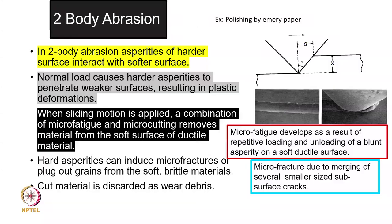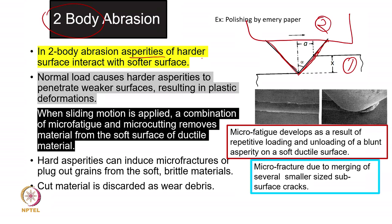Now we will start with 2-body abrasion. In 2-body abrasion, we consider only 2 surfaces — surface 1 and surface 2 — both having some sort of asperities. I am showing a conical asperity which will act as a cutting tool in this situation. In 2-body abrasion, the asperity of the hardest surface interacts with the softer surface. Assuming material 2 is harder, if I apply a load, under the load asperities will dig into the soft surface and get positioned there.